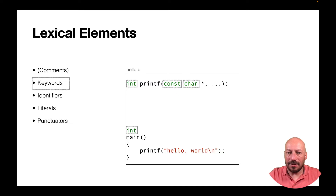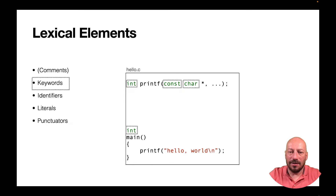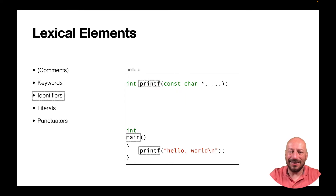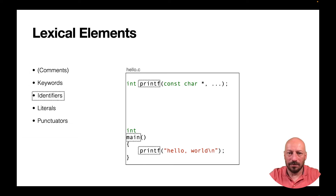The next kind — the reserved words or keywords — in this case int and const. And the next token kind, the identifiers, is the kind of token you can use for variable names and function names. Here we have two tokens of this kind: printf and main.